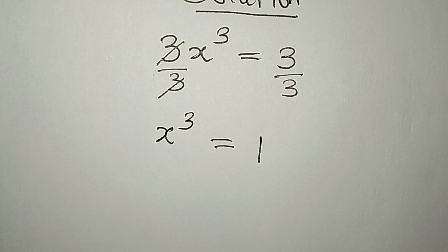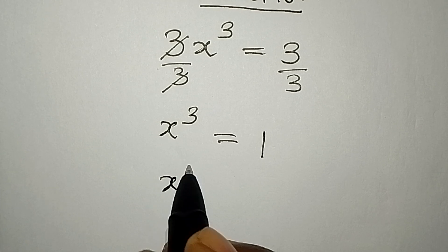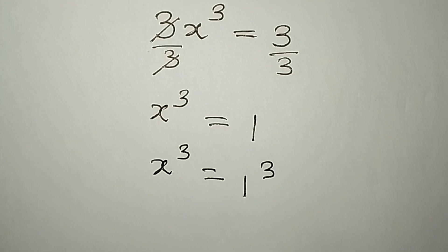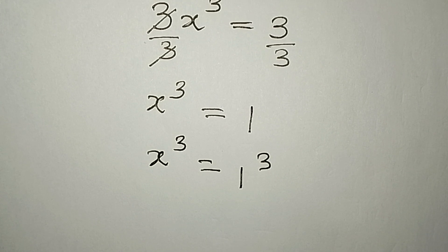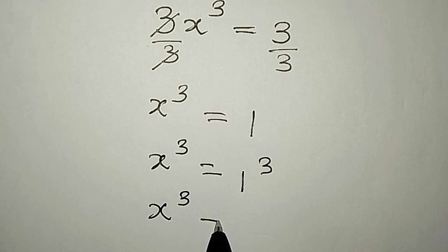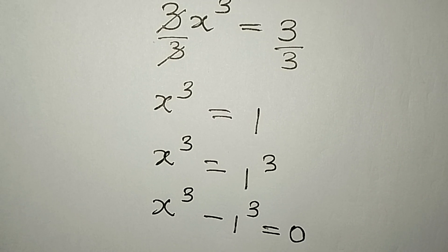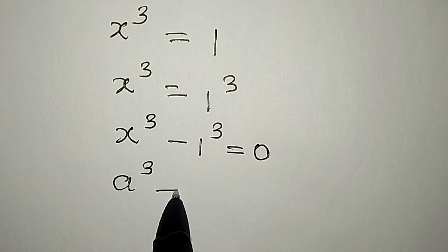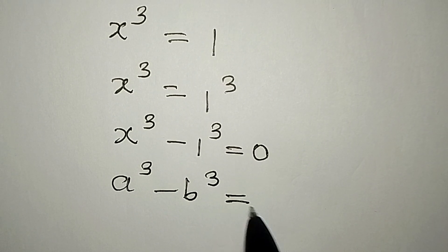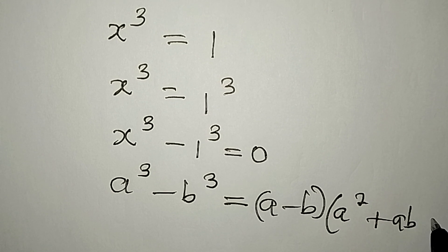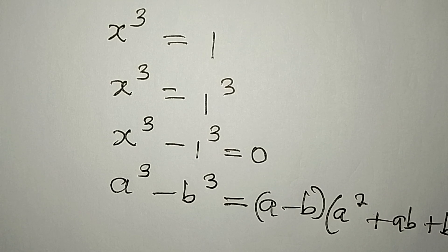Now we are going to get the three solutions. We rewrite this as x³ = 1³, and then as x³ - 1³ = 0. We apply the standard identity: a³ - b³ = (a - b)(a² + ab + b²).